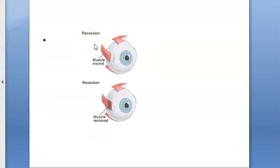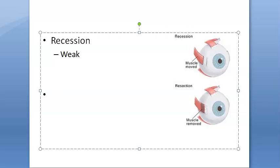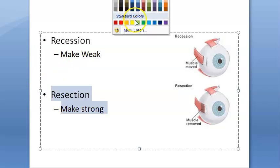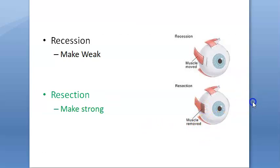Surgically, they will either strengthen the weak muscle or weaken the strong muscle. Recession means the muscle is moved backward, which weakens it. Resection means cutting a portion of a long muscle — the muscle's length decreases and it becomes stronger. So recession weakens, resection strengthens.